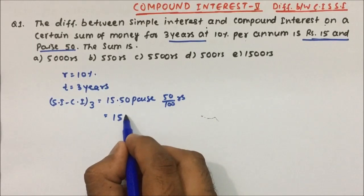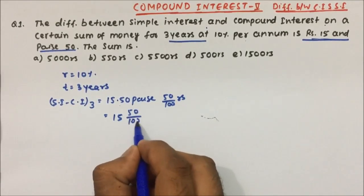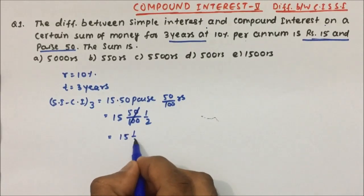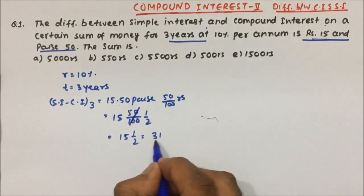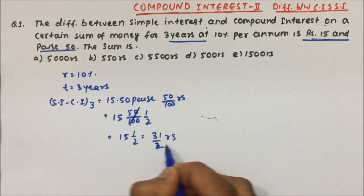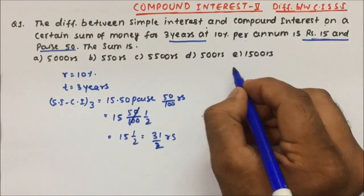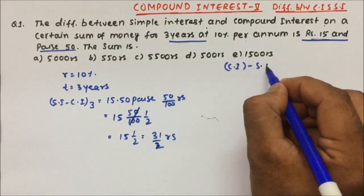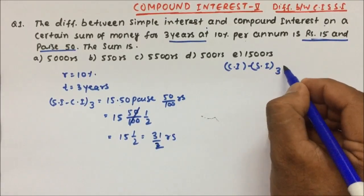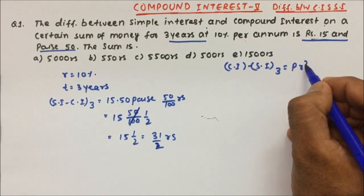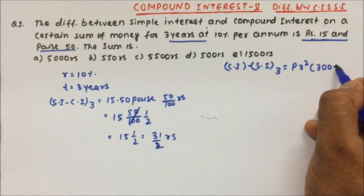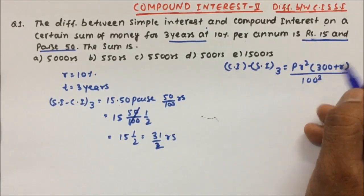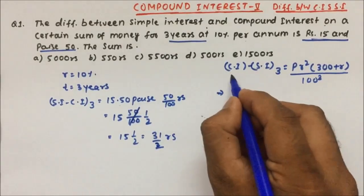Converting 50 paise to rupees: 50/100 = 1/2, so the difference is 15 and 1/2 rupees, which is 31/2 rupees. Now there is a formula for the compound interest and simple interest difference for 3 years, which is P·r²·(300 + r) divided by 100 cube.